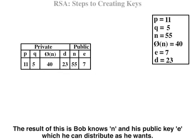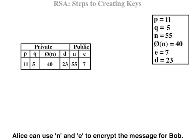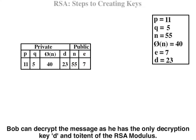The result of this is that Bob knows N and his public key E, which he can distribute as he wants. Alice can use N and E to encrypt the message for Bob. Bob can decrypt the message as he has the only decryption key D and the totient of the RSA modulus.